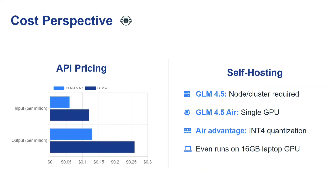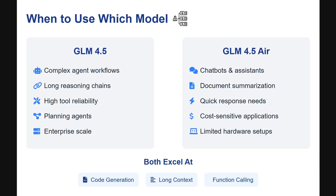From a cost perspective, GLM 4.5 Air is about half the cost compared to GLM 4.5. That said, the API cost is actually quite low overall — input and output per million tokens is about $0.30, so it's not much either way.